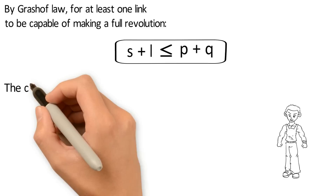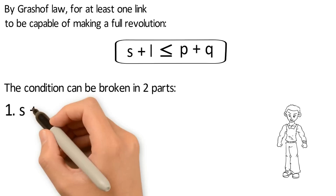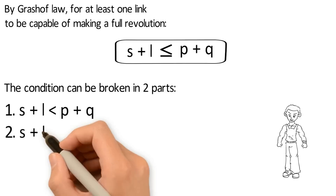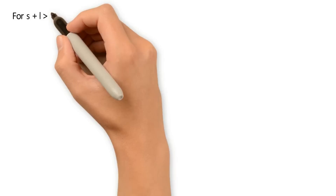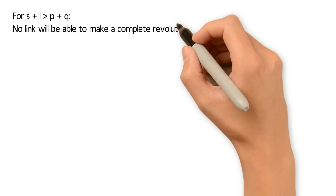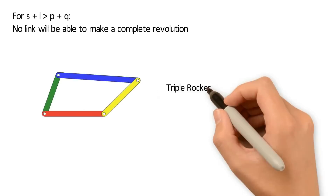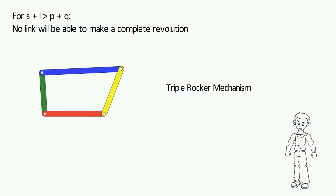The condition can be broken into two parts. First, S plus L is less than P plus Q. Second, S plus L equals P plus Q. What if the sum of the shortest and longest link is greater than the sum of the other two links? For S plus L greater than P plus Q, no link will be able to make a complete revolution. The mechanism so obtained is known as a triple rocker mechanism, where all three links other than the fixed link are oscillating.